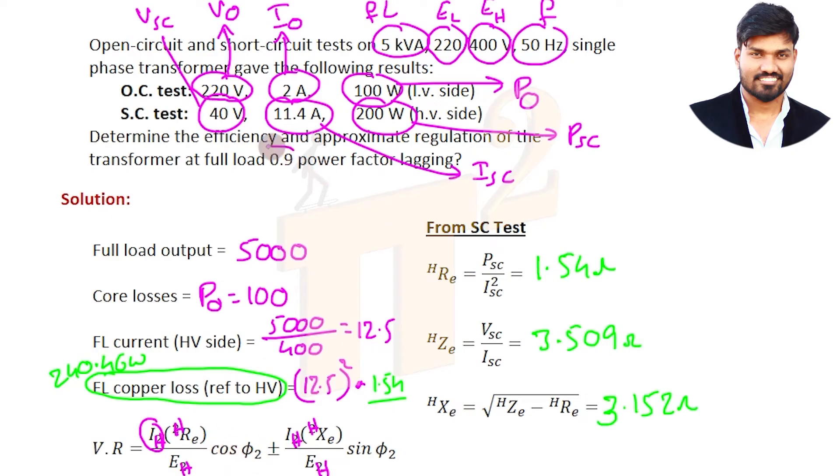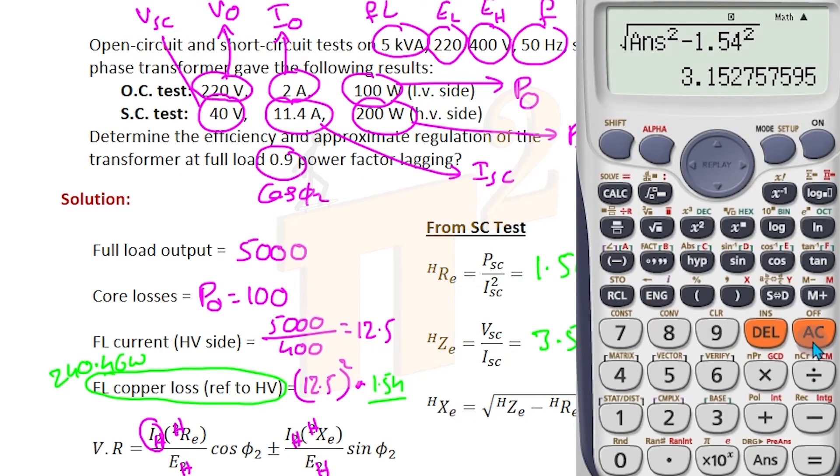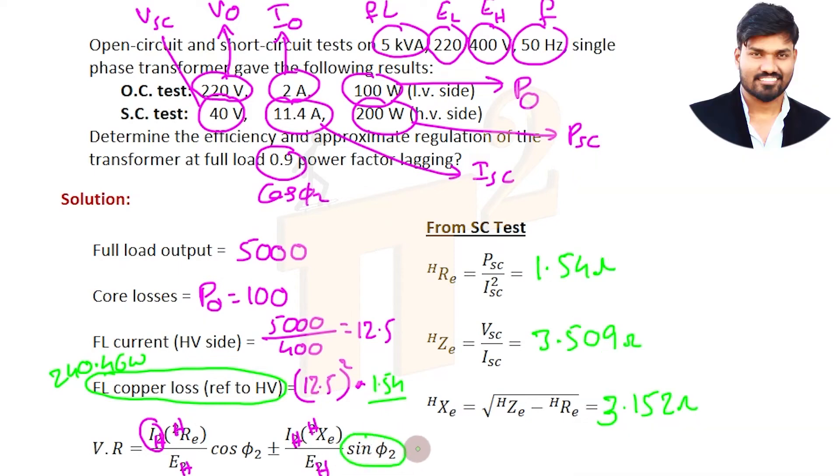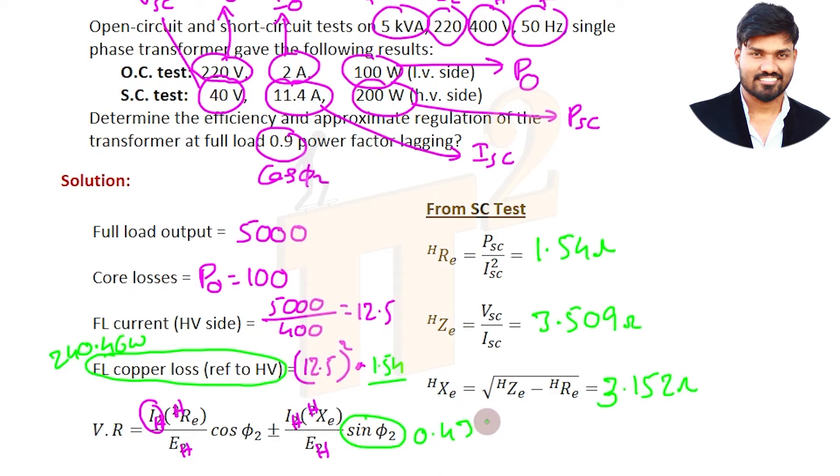cos φ_2 is 0.9. From this cos φ_2 find sin φ_2. sin φ_2 is sin of cos inverse of cos φ_2. Simple mathematics. So sin φ_2 is 0.435 or 0.436 to be more precise, and cos φ_2 is 0.9. Now everything is known, just plug the numbers and get the value.